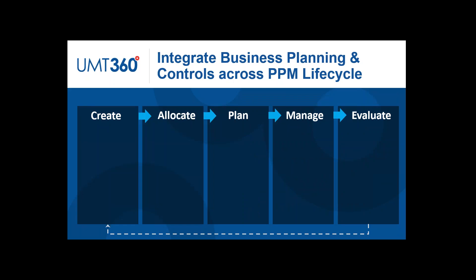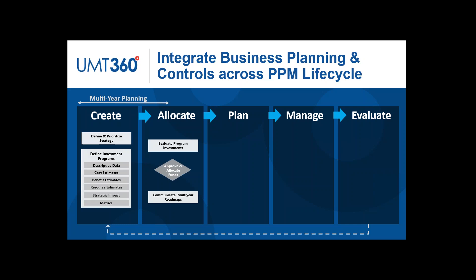What is key is the ability to integrate business planning and controls across the traditional PPM lifecycle. There isn't a one-size-fits-all approach. Today we're looking at how to better harmonize program and project investments to establish business planning controls across the PPM lifecycle. Key phases across the project and program lifecycle are: Create, Allocate, Plan, Manage, and Evaluate.